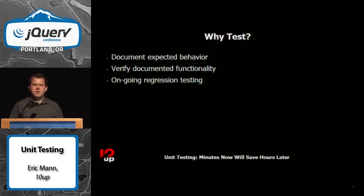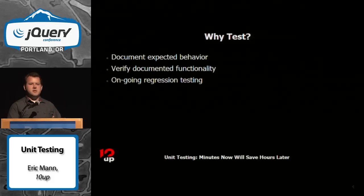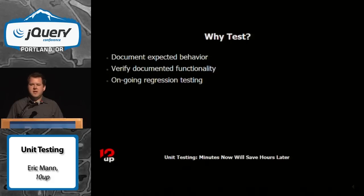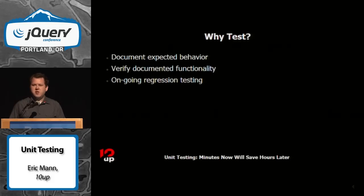Unit testing is a way to explicitly define what your program is supposed to do. These are the inputs this function is supposed to have, and this is what it's supposed to give back. You write these tests in a scriptable, readable way — junior developers, senior developers, and other members of the community can look at it and understand what the code is supposed to do.